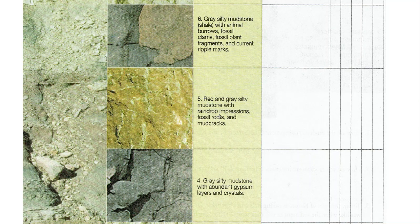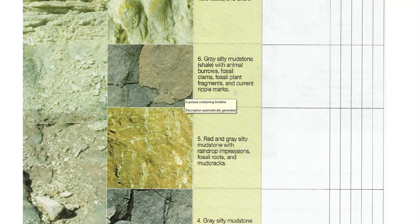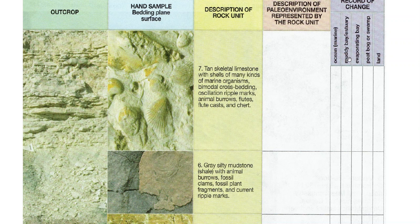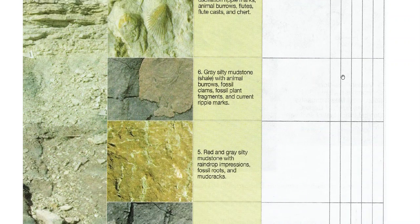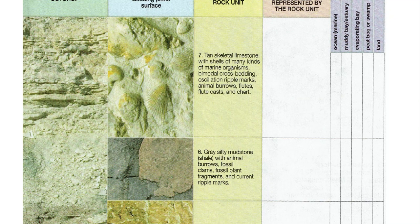The environment here was probably some grassland near the shore. Then going up to gray silty mudstone with shallow animal burrows, fossil clams, fossil plant fragments, and current ripple marks — again shallow water. This is probably a good example like what you'd find in San Francisco Bay: a muddy bay estuary. I don't see any gypsum here. Then back to limestone, so we're back in the marine environment.